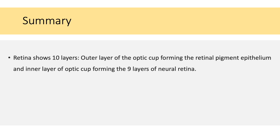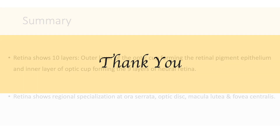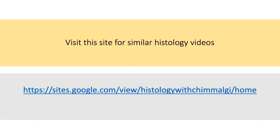Quickly recalling what we have covered: retina shows ten layers, with the outer layer of the optic cup forming the retinal pigment epithelium and the inner layer forming the nine remaining layers of neural retina. Retina shows regional specialization at the ora serrata, optic disc, macula lutea, and fovea centralis. Thank you — hope you enjoyed this video. You can also visit this site for other histology videos.